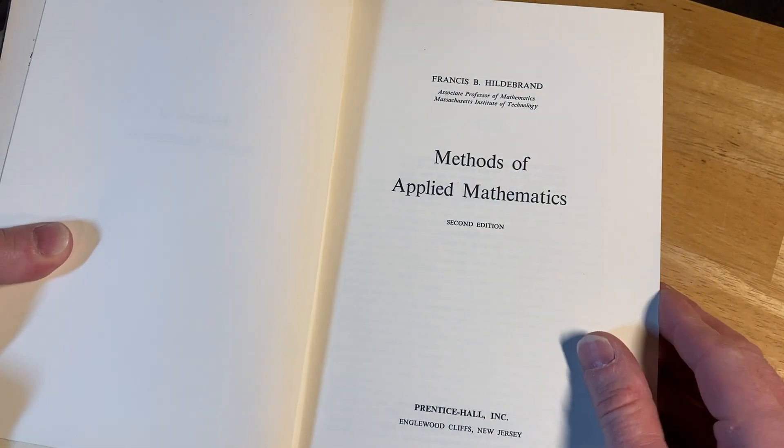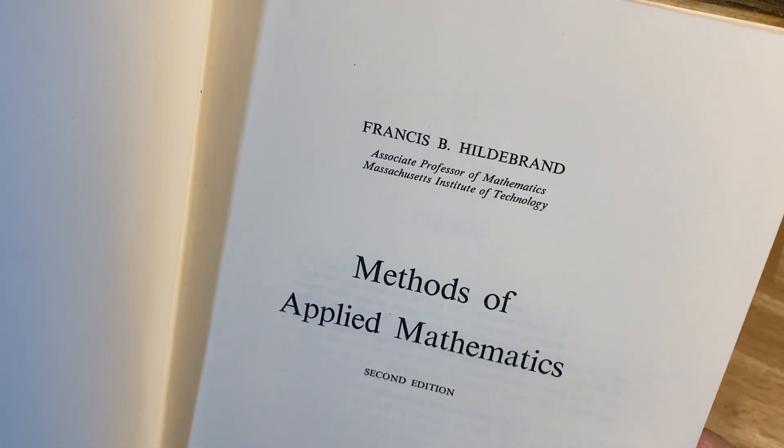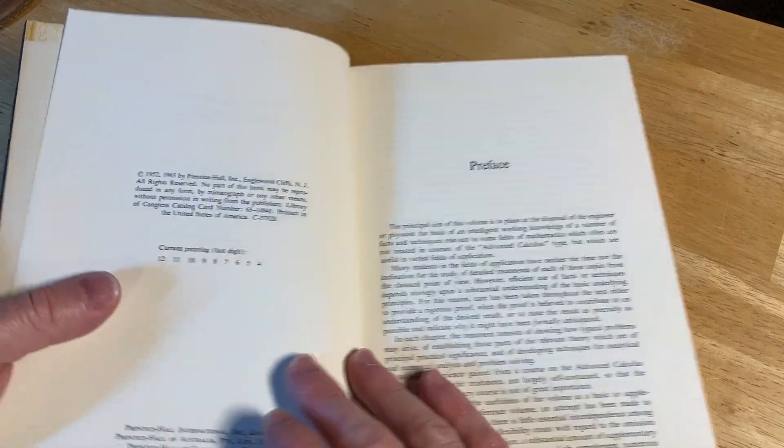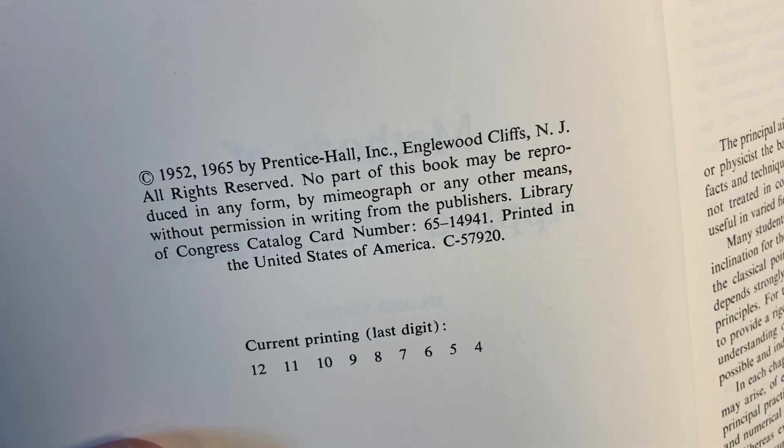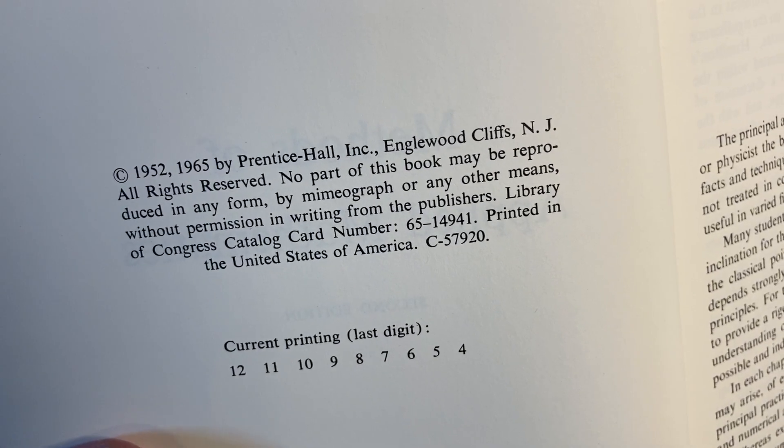Methods of Applied Mathematics, second edition. I think it has a phone number too. Associate Professor of Mathematics, Massachusetts Institute of Technology. And here are the copyrights, originally from 1952 and then also 1965.